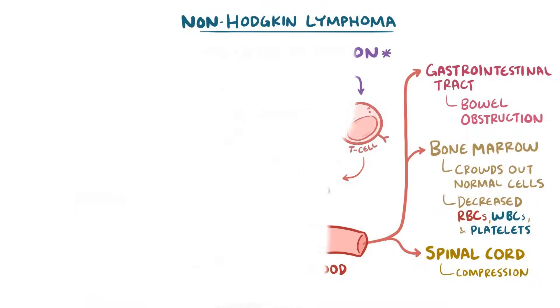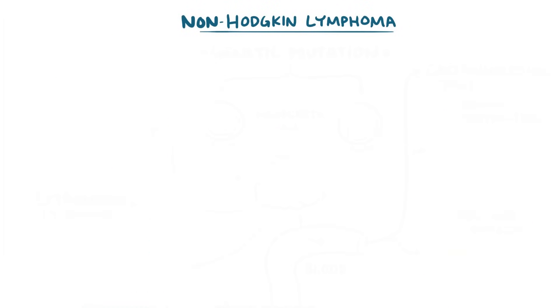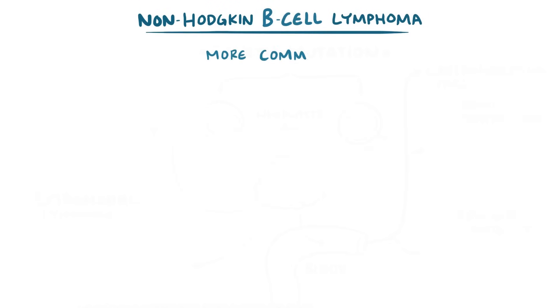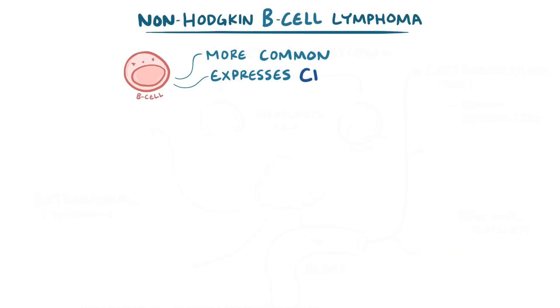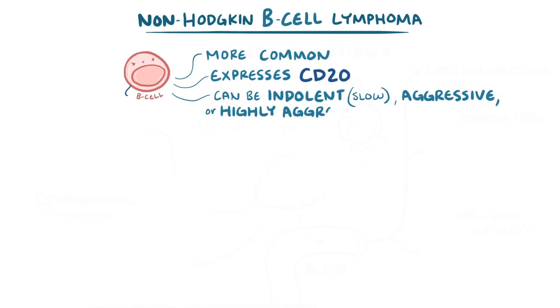The two main groups of non-Hodgkin lymphomas are B cell and T cell lymphomas. B cell lymphomas are more common, and the neoplastic B cells usually express CD20 on their surface. There are various types of B cell lymphomas, and an important feature is how quickly each one grows — they can be indolent or slow to grow, aggressive, or highly aggressive.